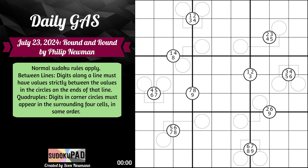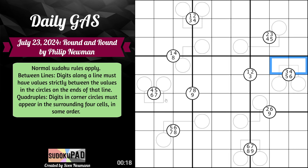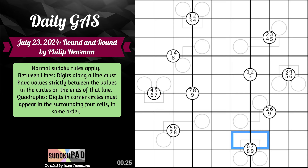Those are the rules. Let's jump right into it. So right off the bat, the only way this works is if this is 1, 4 and this is 2, 3. And we can do this with any of these — 6, 3; this would have to be 3, 4; 4, 7; this would have to be 4, 7 with 5, 6; and this would have to be 6, 9 with 7, 8. So we have that same pattern running around for all these between lines and quadruples.